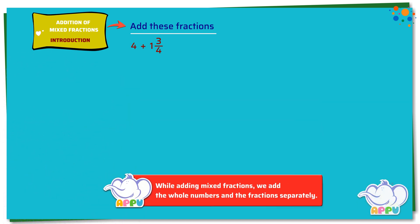We write this as 4 plus 1 plus 3 by 4. We add the whole numbers first. 4 plus 1 equals 5. Then we add the fraction. 3 by 4. This is equal to 5 3 by 4.